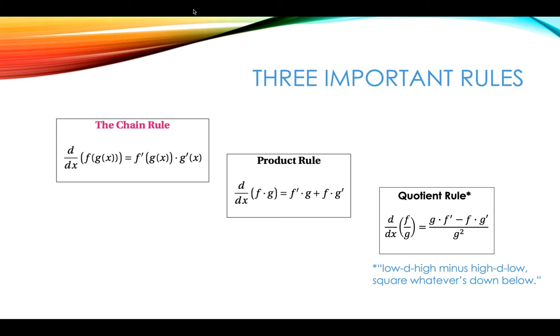The quotient rule when you have f divided by g is the derivative of f over g equals g times f prime minus f times g prime over g squared.